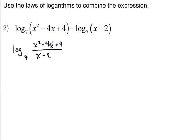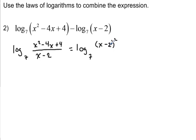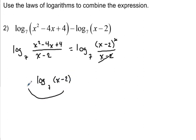You may think we can leave the expression like this. However, the top expression can be factored. To factor it, we need two numbers that multiply to positive 4 and add up to negative 4 — that will be negative 2. So we rewrite the top as log base 7 of (x minus 2) squared, because (x minus 2)(x minus 2) yields x squared minus 4x plus 4, over x minus 2. One factor of x minus 2 cancels, and what we're left with is log base 7 of (x minus 2). And that is our answer.